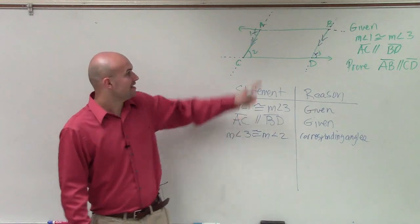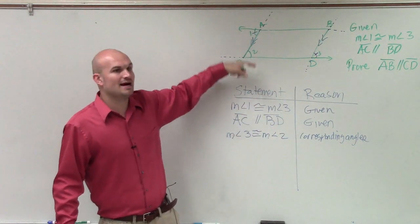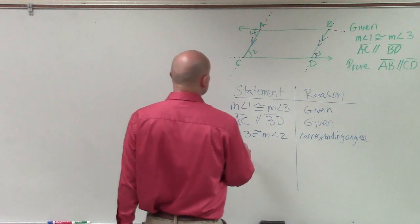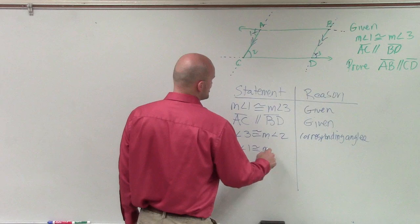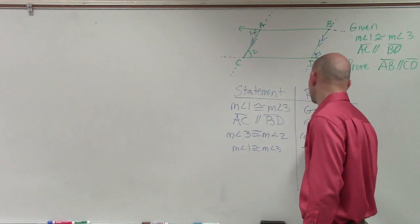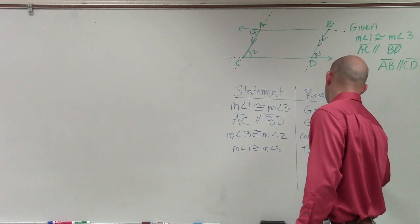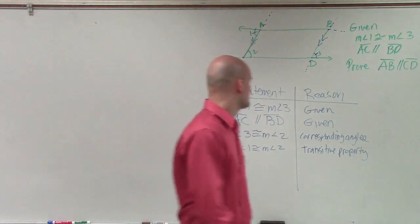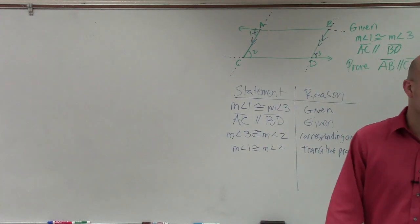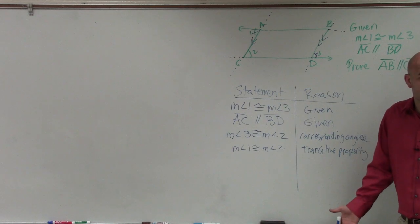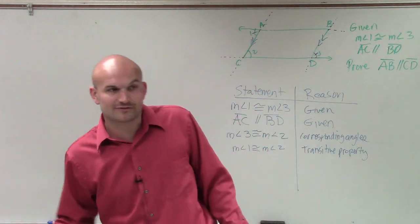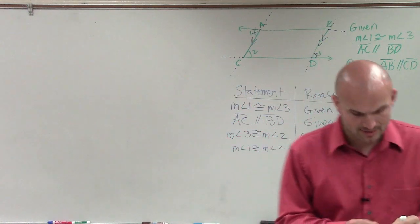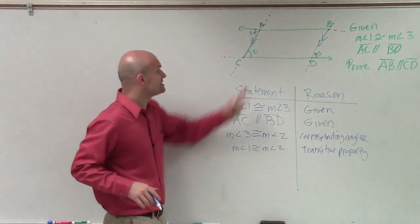So now: if angle 1 is equal to angle 3, and angle 3 is equal to angle 2, can you confirm that angle 1 is equal to angle 2? Yes. So now we can say measure of angle 1 is congruent to measure of angle 2. The property we call that is the transitive property. We already know angle 1 and angle 3 are equal because that was given, and angle 3 is congruent to angle 2, so angle 1 and angle 2 must be congruent — that's the transitive property.